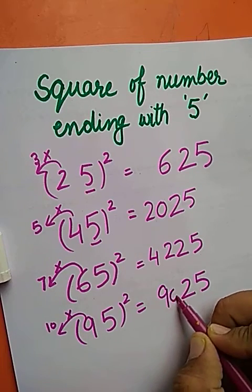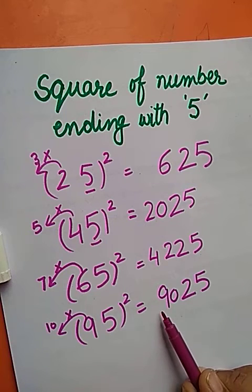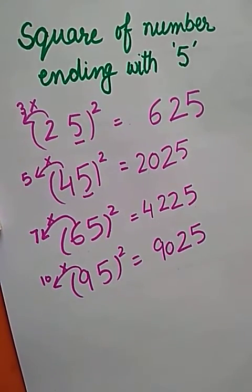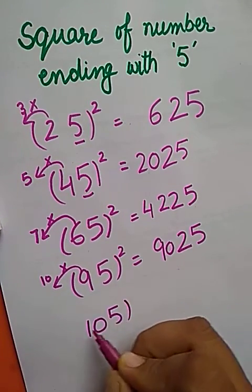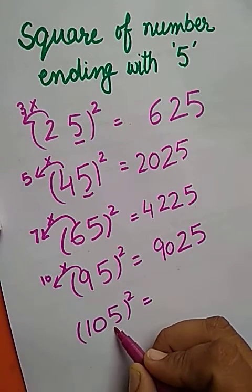Now let us find the square of number 105. The last digit here is 5, so 5 times 5 is 25. The number next to 10 is 11.